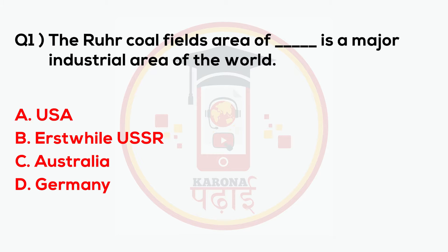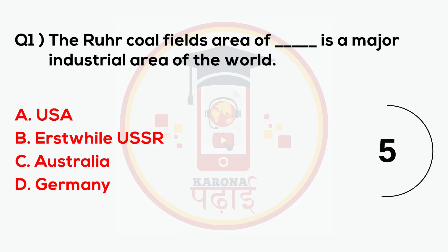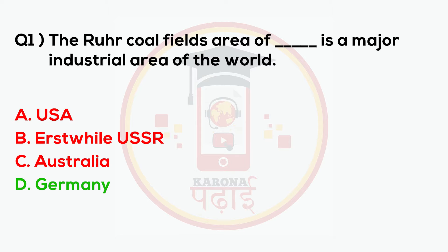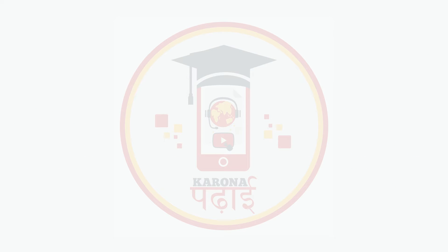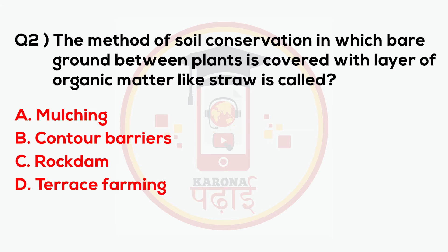The rural coal fields area of blank is a major industrial area of the world. Answer: Germany. The method of soil conservation in which bare ground between plants is covered with a layer of organic matter like straw is called — which of the following?